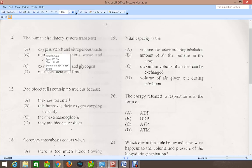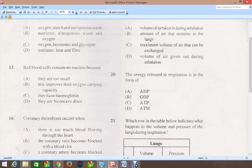As you can see, for question 14, the human circulatory system transports, and the correct answer for that is B, which says nutrients, nitrogenous waste, and oxygen. That is the correct answer.